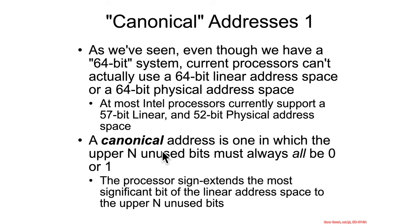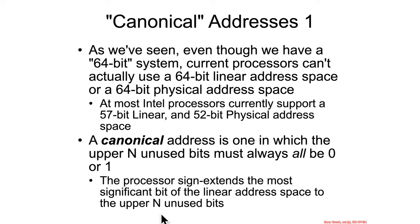Canonical addresses are ones in which the upper n unused bits are always 0 or 1. So if you had a new processor supporting 57 bits, the bits beyond 57 would all have to always be 0 or always be 1, and the processor would just sign-extend the 57th bit — or 56th bit if you're zero-indexing — so that 1 or 0 is set for all of the uppermost bits.